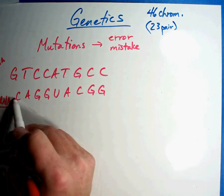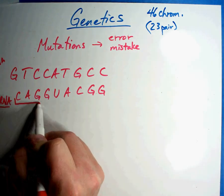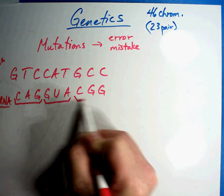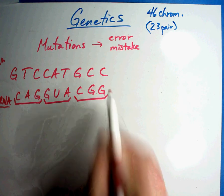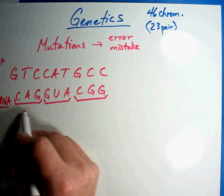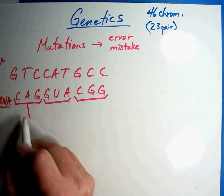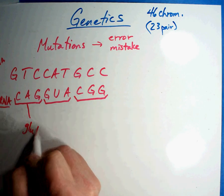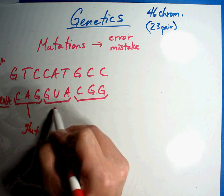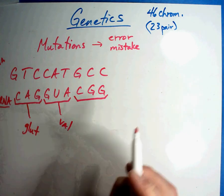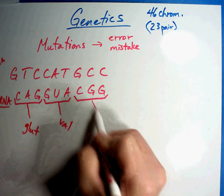When you run it through your ribosomes, you read it in threes with all your transfer RNA and it works great. When you run it through, you should get: these three would make glutamic acid, these three make valine, and this one makes arginine.